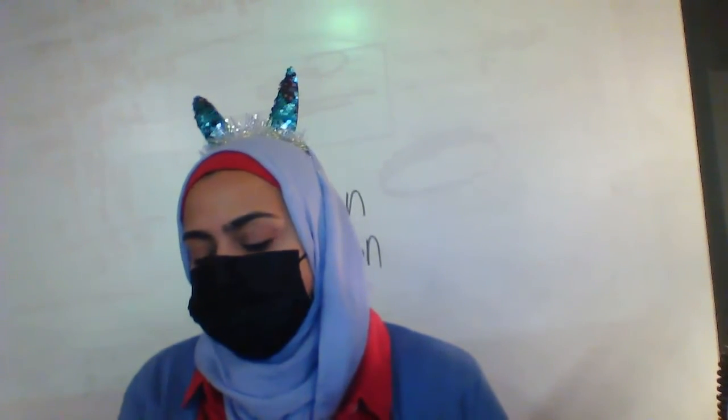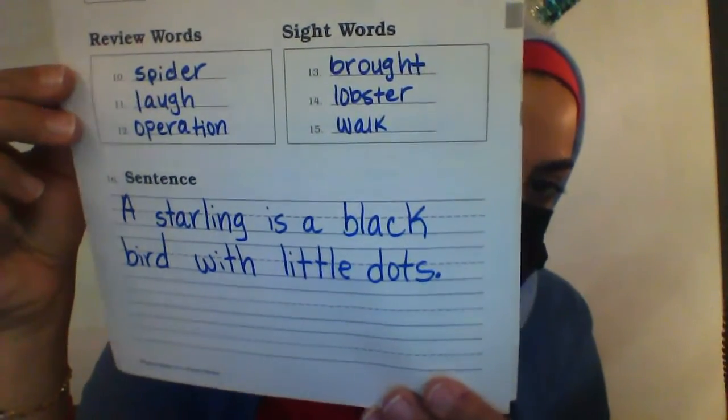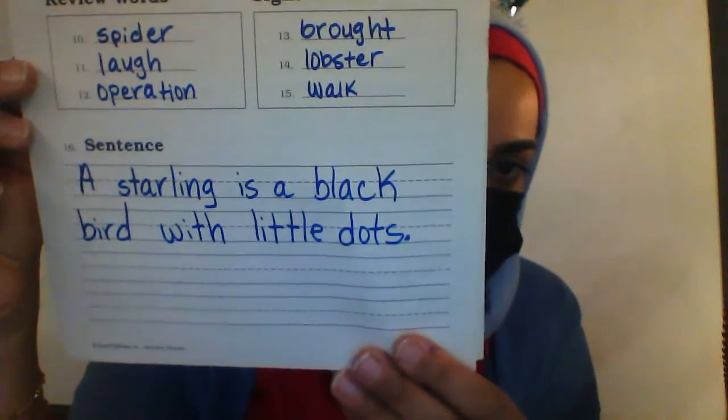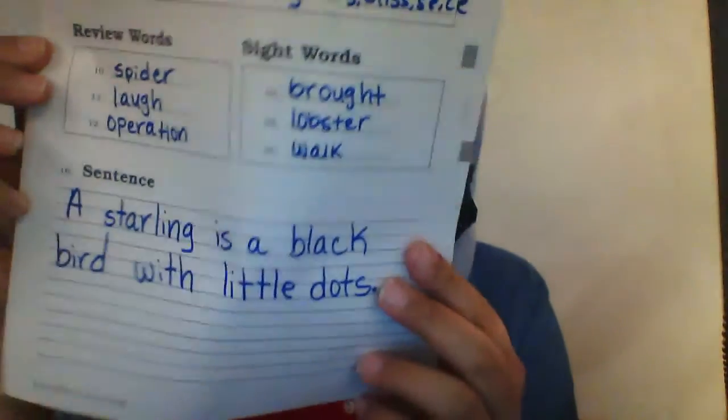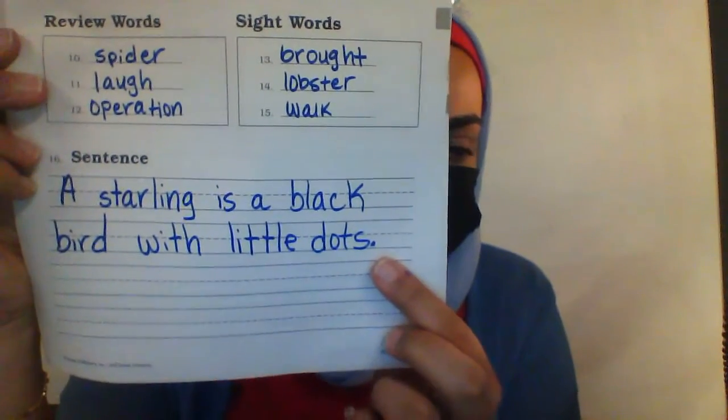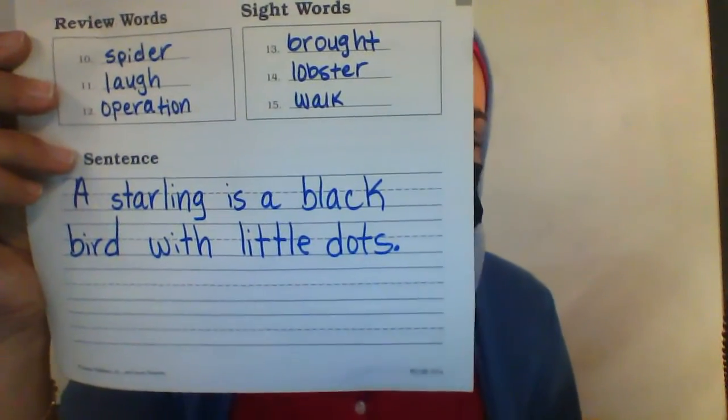Where it says sentence, listen to the sentence first and then write it out loud with me. A starling is a black bird with little dots, period. Go ahead and write that down now. Make sure you're working on your handwriting — that's why they gave you the lines. Make sure there's a period at the end and a capital letter at the beginning. You can pause the video now.